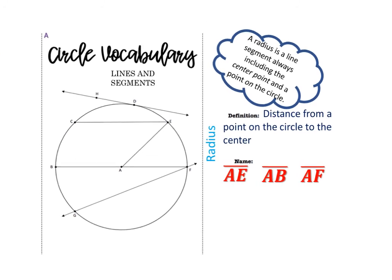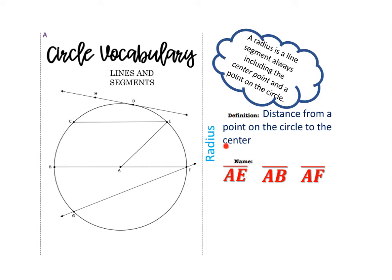The next word is radius. The definition of a radius is the distance from a point on the circle to the center. Any point on the circle — the distance between that and the center is the radius. So AE is a radius, AB is a radius, and AF is a radius. The radius is a line segment, which is why we name it this way. A radius always includes the center point and a point on the circle, so in circle A, all your radiuses should include the letter A.